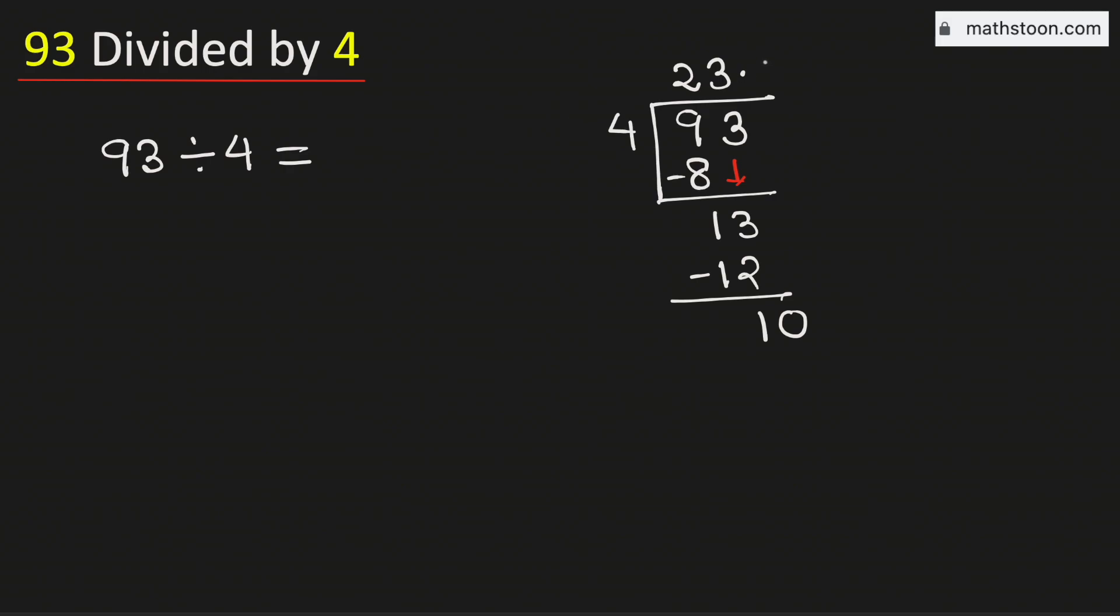Now 4 times 2 is 8. Subtract, we get 2. Again 2 is less than 4, so we will bring down another 0.